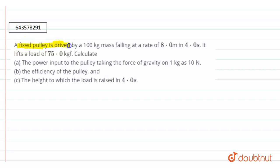Hello. Our question is: a fixed pulley is driven by a 100 kg mass falling at a rate of 8 meter in 4 seconds. It lifts a load of 75 kgf. Calculate the power input of the pulley taking the force of gravity on 1 kg as 10 newton.